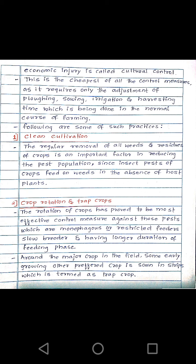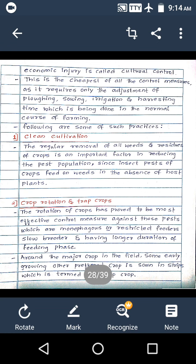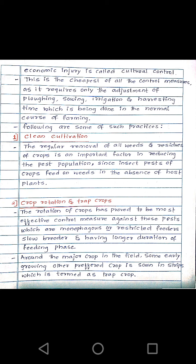The second method is crop rotation and trap crops. Rotation of crops has proved to be the most effective control measure against pests that are monophagous and restricted feeders, slow breeders, and have a longer duration of feeding phase. These insects are totally dependent on a single crop, so to reduce their population we have to change the crop grown in a field.